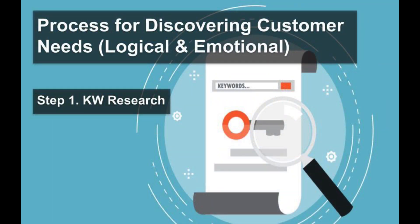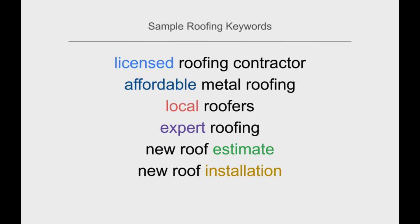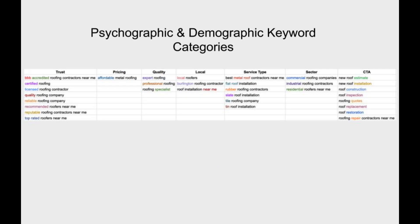Much of the logical and emotional needs of your customers can be discovered through the actual phrases they use to find your services. Search terms not only indicate the precise services people need, but also hint at other psychological needs they have in the process of hiring. Take, for example, the following phrases on the screen from keyword research for a roofing campaign. Each one of these highlighted keywords indicates certain emotional and logical needs and can be placed into categories, as you'll see here. You'll improve your landing page relevancy if you use these exact phrases on it, because it includes long-tail versions of the keywords and you're speaking directly to that customer in their own language.